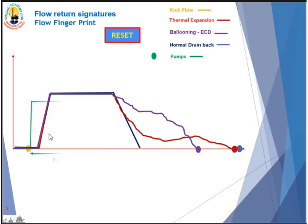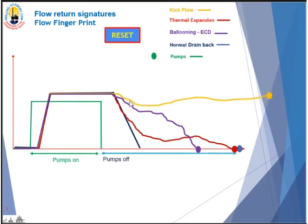And what about a kick? Pumps on and running. When you shut the pumps off, you still have flow return going. It may go down a little, but then eventually it will come up — if you don't shut the well in, it will come up higher and higher and you will have a blowout. So you have four different flow return signatures: normal drain bag, ballooning, thermal expansion, and kick. On every connection and every flow check, make sure you have this chart, get it from the mud logger on your screen, and take a good comparison on the trend. The trend is the key.